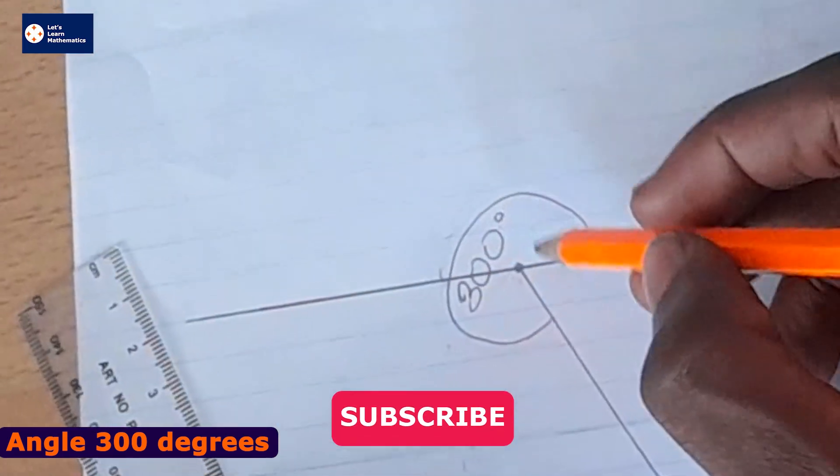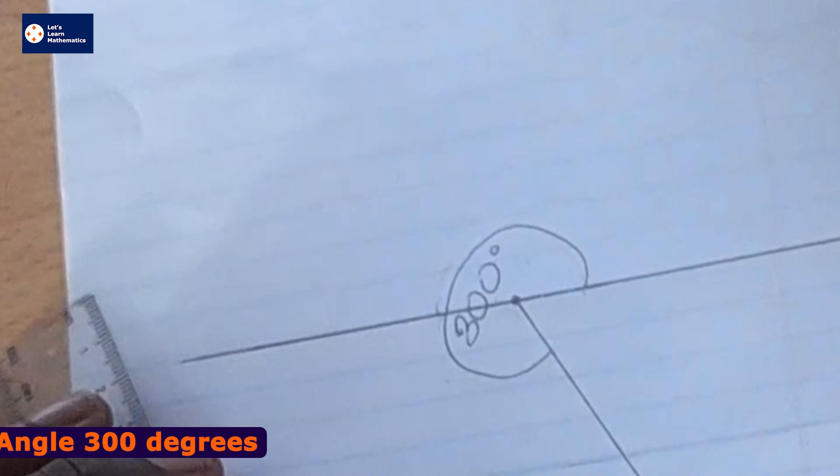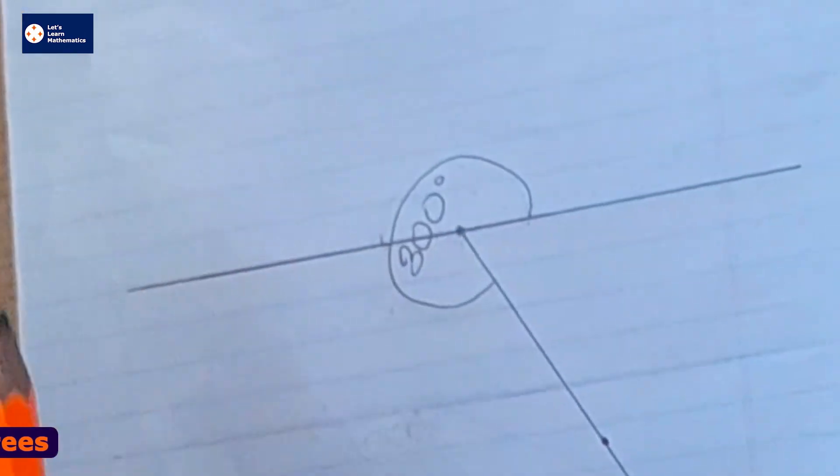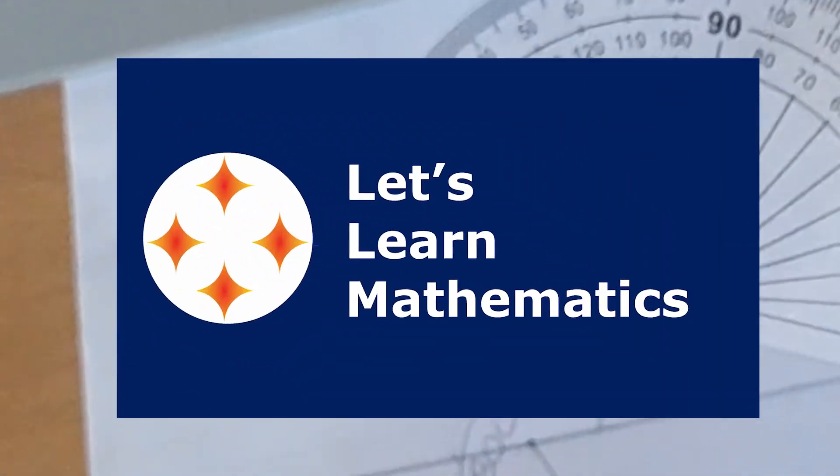So that is how to draw angle 300 degrees using the protractor. All right.